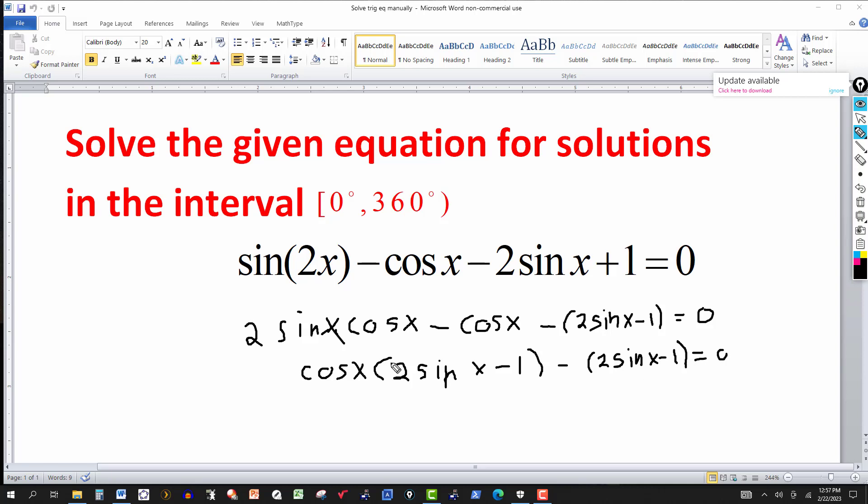So notice here, I have this factor here is common to this factor here. So let's factor that out. And that will give me two sine of x minus one. And I'm left with this cosine of x here, putting parentheses here, cosine of x.